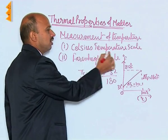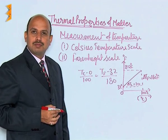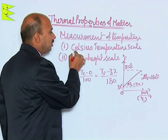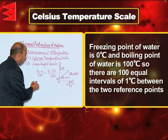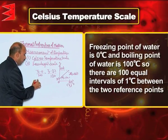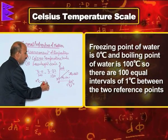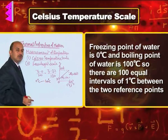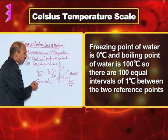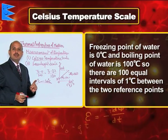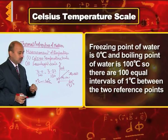The first one is the Celsius temperature scale. In the Celsius temperature scale, the freezing point of water is taken as 0 degrees Celsius and the boiling point of water is taken as 100 degrees Celsius. Between 0 and 100, one hundred divisions are made, and each division is equal to 1 degree Celsius.